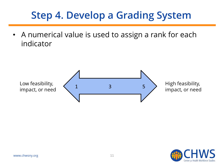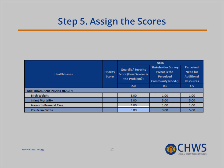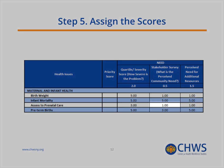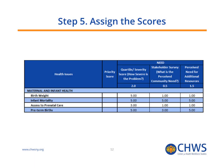Once the grading system has been developed, the next step is to actually score the issues based on the criteria. In this example, we assigned a score of 5 under the severity criteria to preterm births, but only assigned a score of 1 to access to prenatal care under the Stakeholder Survey criteria. We assigned different scores to different criteria based on the healthcare issue.